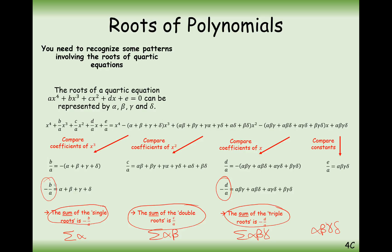As a pattern: minus b over a for single roots applies across all polynomial types — quadratics, cubics, and quartics. c over a is always the sum of doubles, no matter whether it's quadratic, cubic, or quartic. d over a is always negative and always three roots multiplied together in all possible ways — in quadratics this doesn't apply as there aren't three roots; in cubics it happens once; in quartics it happens four different ways. e over a only appears with quartics and is simply all four roots multiplied together.